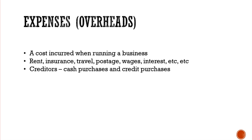Just as with sales, there are cash purchases and credit purchases for expenses. A cash purchase might be buying stamps — you hand over the cash and receive the stamps. Credit purchases occur when you're invoiced for materials or other things and cash isn't exchanged instantly. When there are outstanding invoices owed to your suppliers, these are referred to as creditors — people or companies you owe money to.